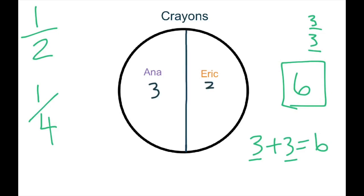They each have three, and three and three are the same, so that makes it half. They're the same piece, and three and three also make six, which is how many crayons we have all together. So, what fraction of the crayons are Anna's? Well, the answer would be one half. What fraction of the crayons are Eric's? One half.